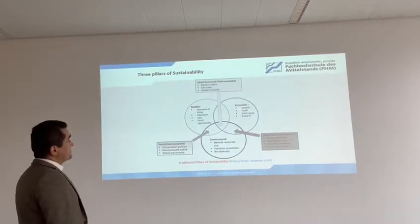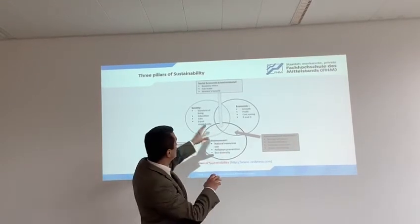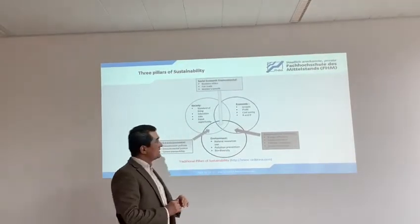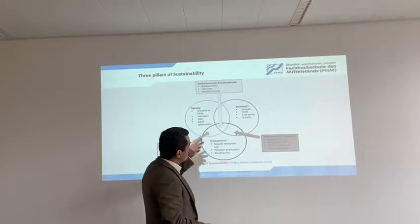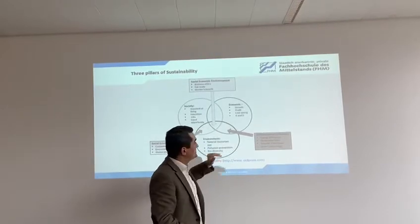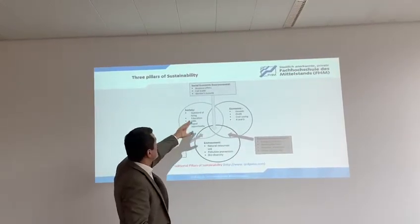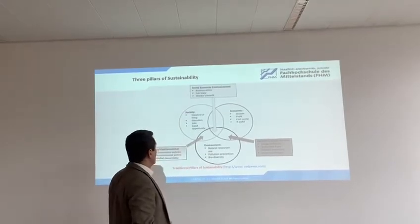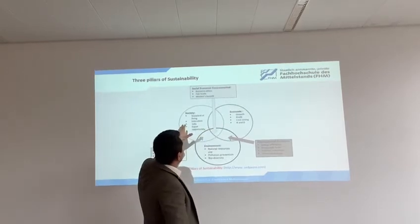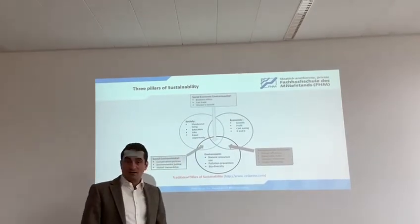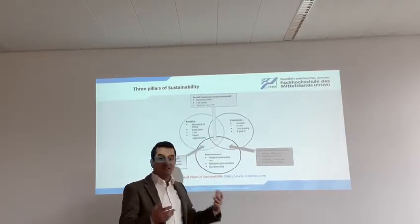As we discussed before, we have three traditional critical pillars of sustainability: environment, economy, and society. When we put them together, we have different common areas. For example, the common area between economy and environment is environmental economy. The common area between society and environment is social environmental. The common area between economy and society is social economy. And the main common area for all three pillars is sustainability.